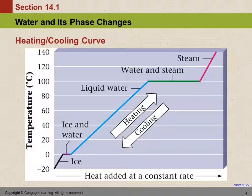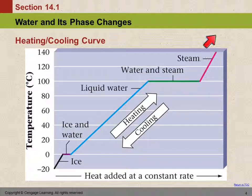Then it gets hotter fast — that's when your pot kind of burns up. But as long as there's some water there, it'll stay at 100 degrees Celsius. As soon as all of that liquid is converted to steam, then the temperature will rise. After it converts to the gas state, the temperature goes up again.